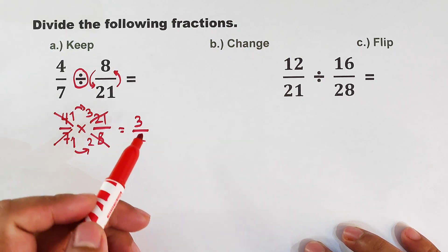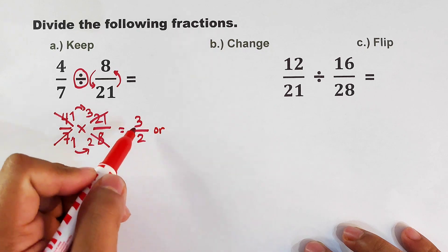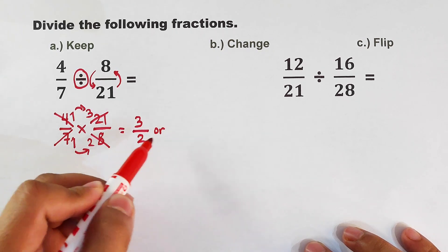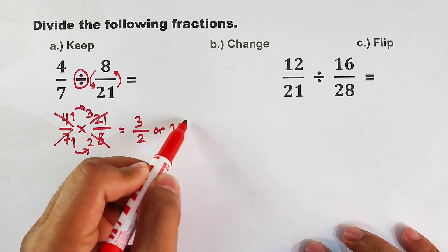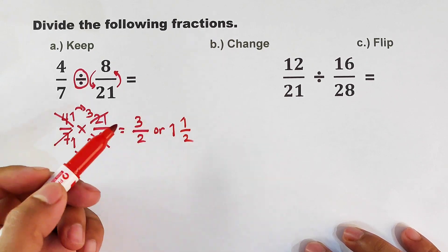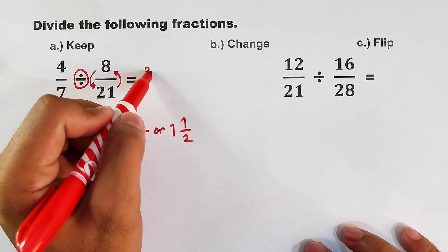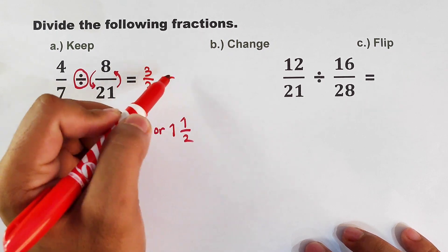But I would suggest that you should convert this into mixed number. The equivalent mixed number of 3 over 2 is simply 1 and 1 half, meaning we can declare that the possible answers are 3 over 2 or 1 and 1 half.